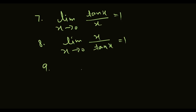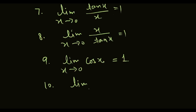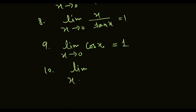Ninth formula is: limit x tends to 0, cos x. Put 0 in it: cos 0 equals 1. Tenth formula is: limit x approaches to 0, log(1 plus x) upon x, equal to 1.